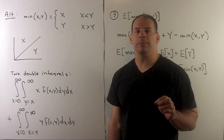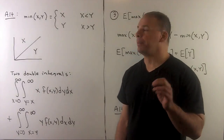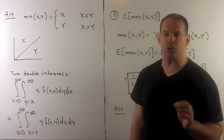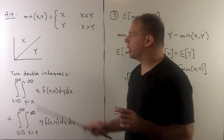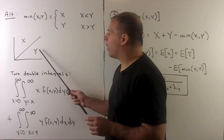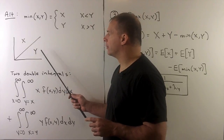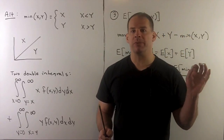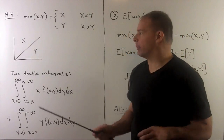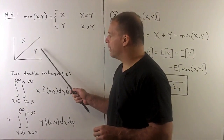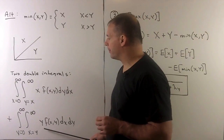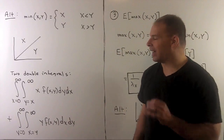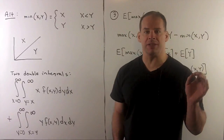As an alternative method we can integrate directly. The minimum of x and y equals x when x is less than y, and equals y when x is greater than y. For the expected value we use the same double-integral procedure as before, but now we put in x on the region where x is less than y and y on the region where x is greater than y, requiring two double integrals. This is left as an exercise to verify the previous answer.